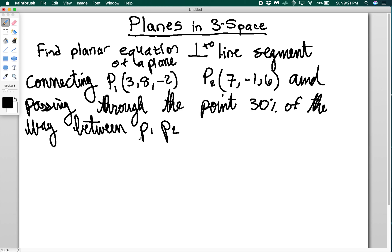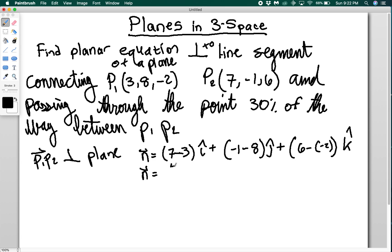And we'll say that it is passing through the point 30% of the way between P1 and P2. Okay, so what that tells me is that P1, P2 is normal to the plane. And if it's normal to the plane, then I can say that my normal vector is going to be equal to the difference between them. Seven minus three i hat, plus negative one minus eight j hat, plus six minus negative two k hat. So my normal vector is going to be equal to 4, negative 9, 8. Okay, great, so now I have a normal vector, awesome.